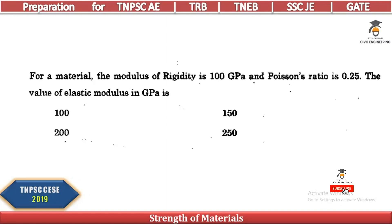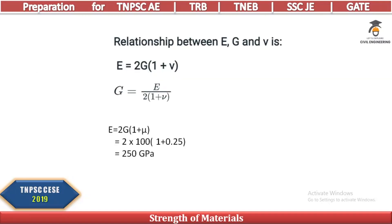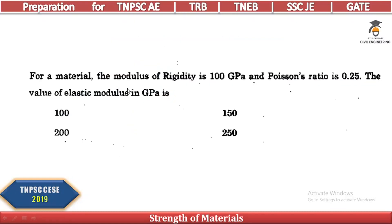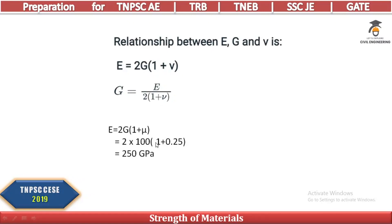For a material with modulus of rigidity 100 GPa and Poisson's ratio 0.25, the value of elastic modulus in GPa is found using the relationship: E = 2G(1 + ν). Substituting: E = 2 × 100 × (1 + 0.25) = 250 GPa. This is a simple formula to apply.